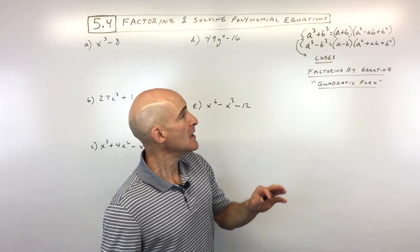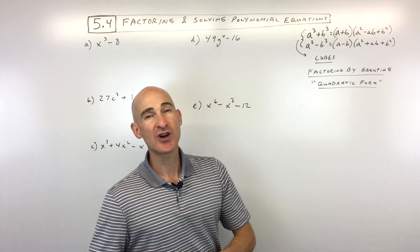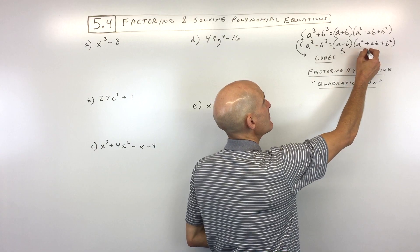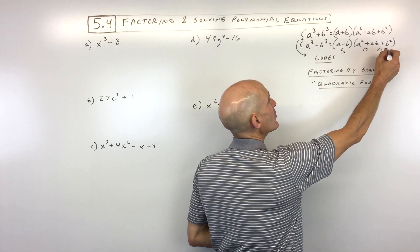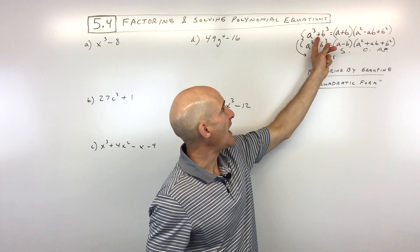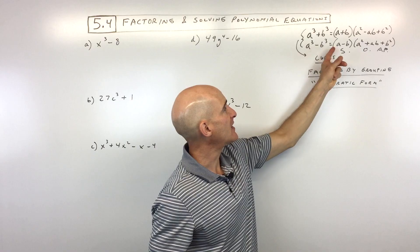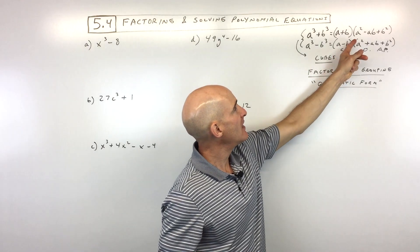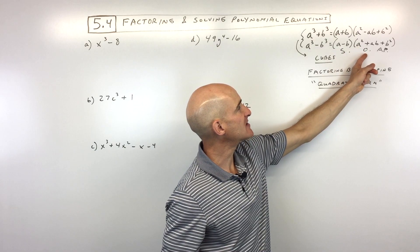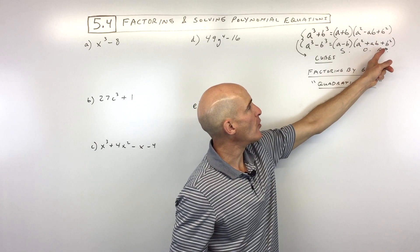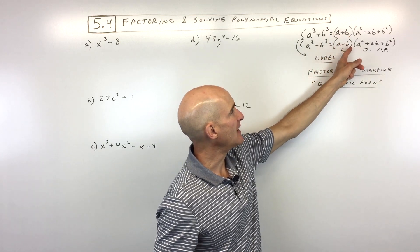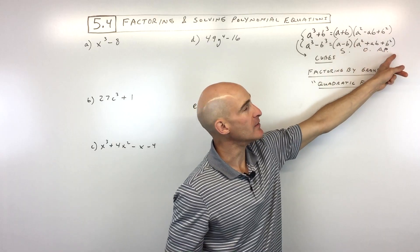That's a lot to remember, but one acronym students use is SOAP: Same, Opposite, Always Positive. The first sign is the same as the original — if you're adding, you add; if subtracting, you subtract. Then it's the opposite sign. And the last term is always positive — it's always adding that b squared. The terms themselves are the same: a and b, a squared, ab, and b squared.